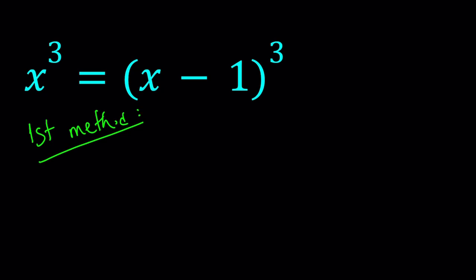So for my first method, I'm going to be using difference of two cubes. Let's remember the formula. a cubed minus b cubed can be written as a minus b multiplied by a squared plus ab plus b squared.